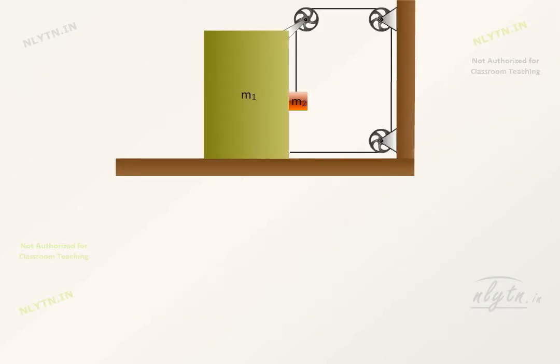First of all, let us establish the relationship between the acceleration of blocks m1 and m2. We can use our string constraint motion technique to find out the relation.